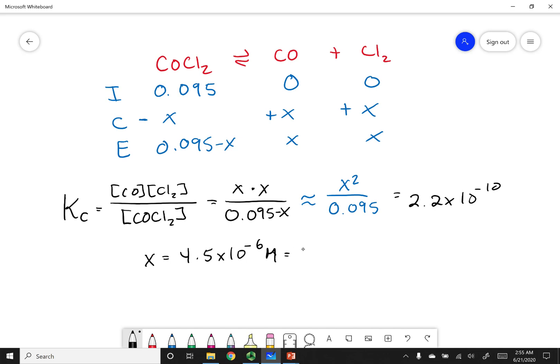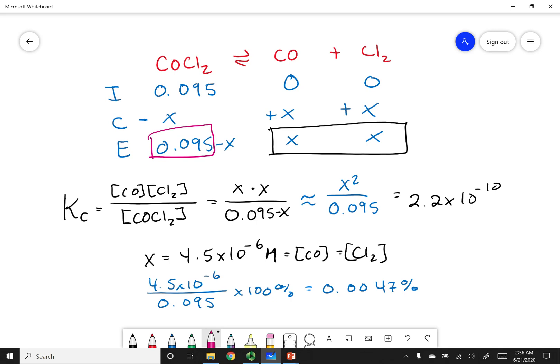This is going to be the concentration of CO and the concentration of Cl2. Before I commit to this answer, let's make sure my assumption is correct. Remember to check your assumption: take your x value, 4.5 times 10 to the negative 6, divided by whatever you are subtracting your x from, in this case 0.095, and times it by 100 percent. This turns out to be 0.0047 percent. So x is tiny compared to that 0.095. It is insignificant. If I were to do sig figs, the equilibrium concentration of phosgene is just going to be 0.095. I hope that made sense, and remember to stay safe.